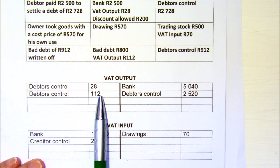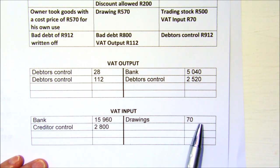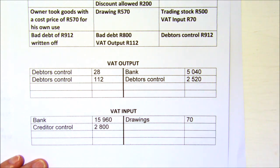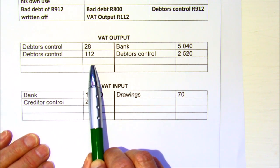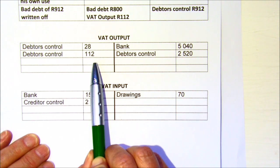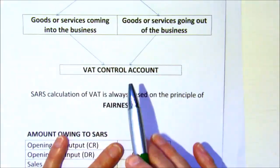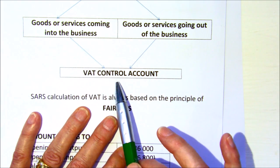There is an alternative method: while I have been putting discount and bad debt adjustments on the debit side of the VAT output account, it is also possible to put them in the input account instead. Similarly, drawings — because you owe SARS money — could go in the output account. You need to ask your teacher which method your school, province, or examining board follows, because you can do it either way and the end result will be exactly the same. After two months the output account is closed off and transferred to the VAT control account.